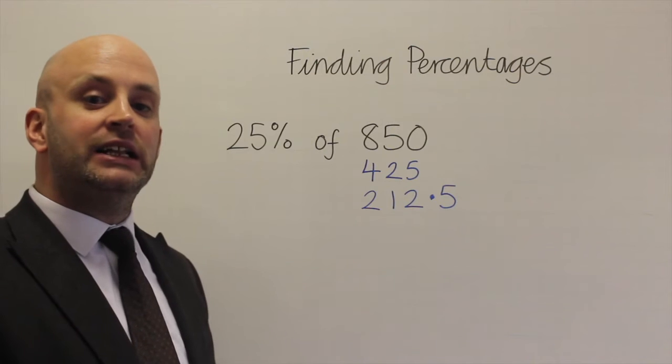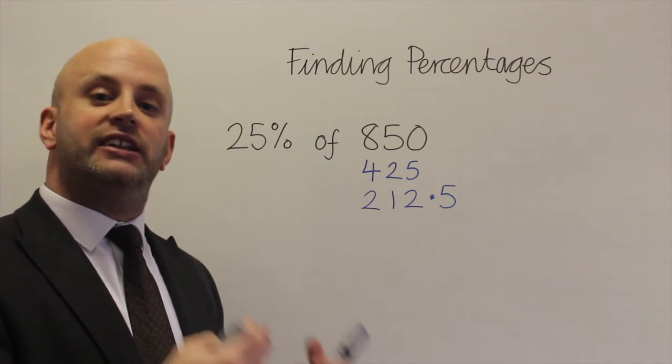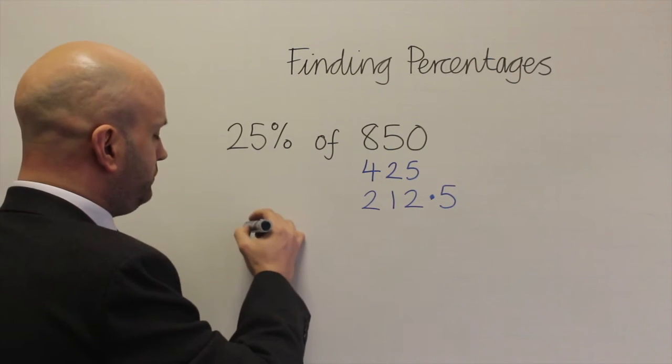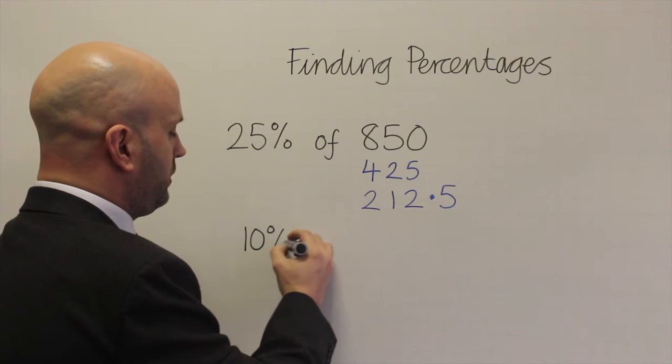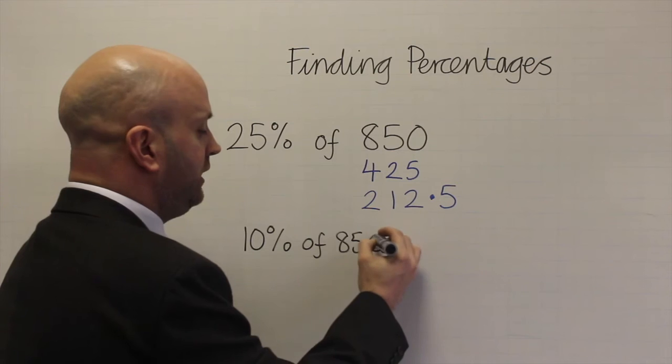Another way to do it would be to build up 25% from what we know about finding 10% and 5%. So I know that 10% of 850 is 85.